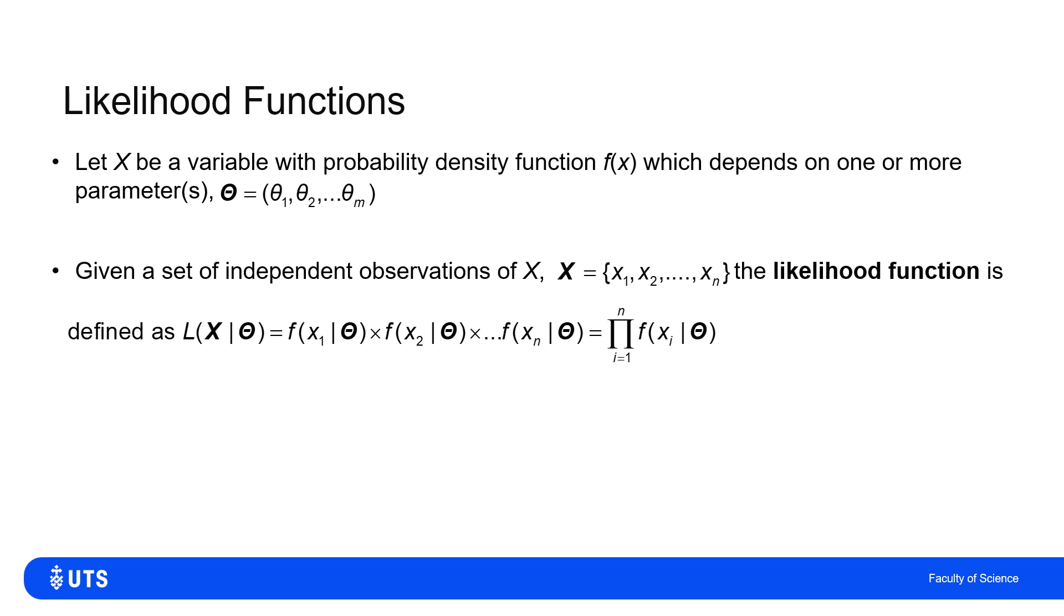So this is written as L(X|θ), so the likelihood of observing each observation if I knew the true values of the parameters. And this is the product of the probability density of observing X_1 if I knew the parameters, multiplied by the probability density of observing X_2 if I knew the parameters, and so on. I can write this in this capital pi notation, so the multiplicative equivalent of the capital sigma for summations. So I just take the product of the probability densities of each observation if I knew the true parameters.